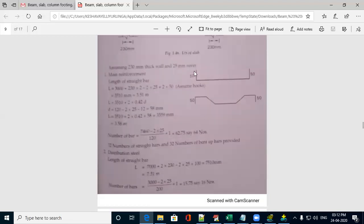So, you have to assume. Let us assume the bend will be like this 50mm on both the ends. So, to find the length of straight bar, this is the clear span 3 meter plus support thickness on both the sides 230mm, minus cover 2 times 25mm, plus 2 times this hook.